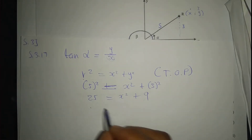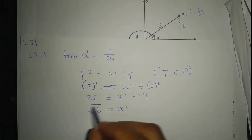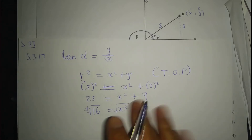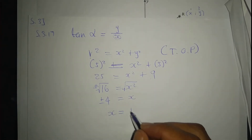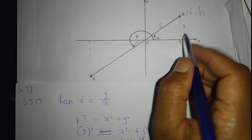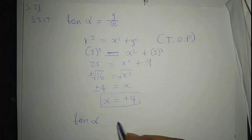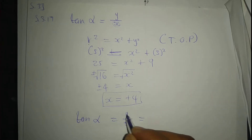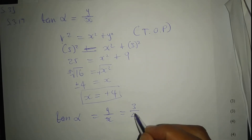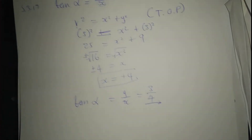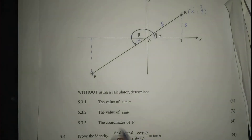So 25 minus 9 equals 16, meaning x² equals 16. Taking the square root of both sides gives x equals plus or minus 4, but since we're in the first quadrant, x equals positive 4. Therefore tan alpha equals y over x, which is 3 over 4.